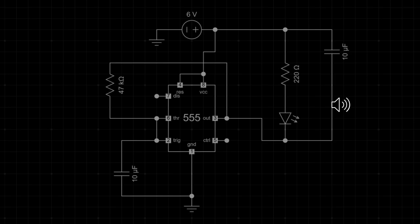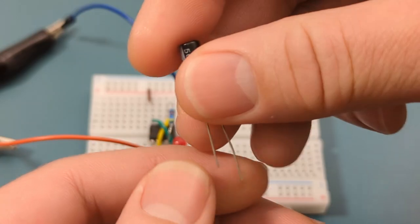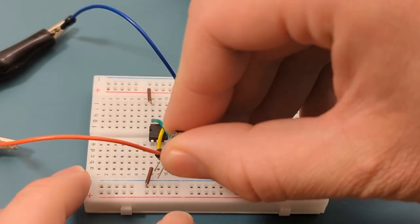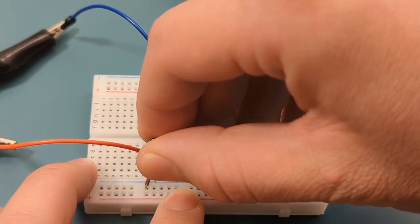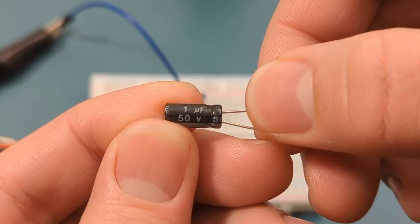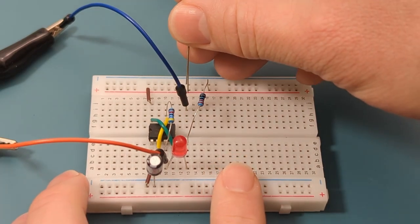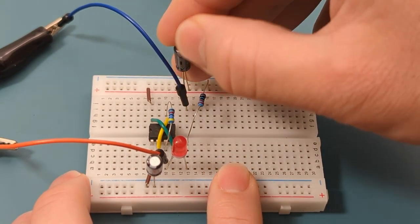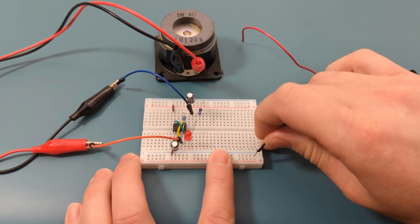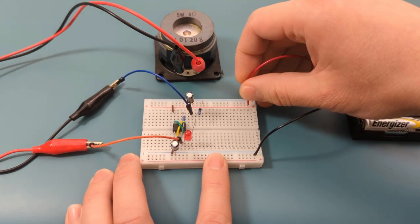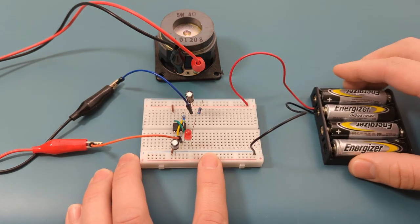You can adjust the sound by adjusting the capacitor or resistor. For instance, the capacitor value is decreased to increase the frequency and achieve a higher-pitched sound. In this case, it's reduced from 10 microfarads to 1 microfarad. Replace the 10 microfarads on both sides of the breadboard. The sound shifts from a rhythmic ticking to a fast ticking.